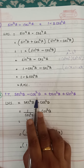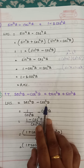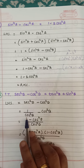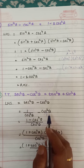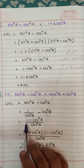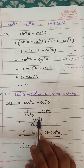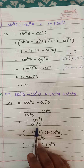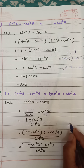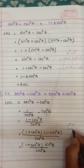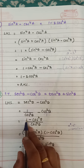Question number 12: sec²a minus cos²a is equal to tan²a plus sin²a. Write LHS. For sec²a we substitute 1 upon cos²a. This is a subtraction of fractions, so cross multiply: 1 minus cos⁴a over cos²a. Now apply the formula a² minus b² = (a plus b)(a minus b), where a is 1 and b is cos²a.